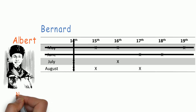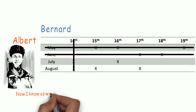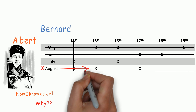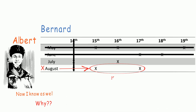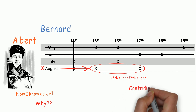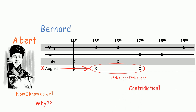Albert then says: Then I now know when Cheryl's birthday is as well. The reason is that Albert was not told August. If Albert were told August, he would not know if it's 15th August or 17th August, leading to a contradiction. We strike off the month of August, leaving us with 16th July as Cheryl's birthday.